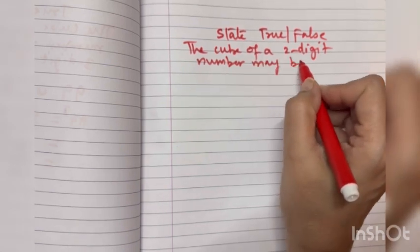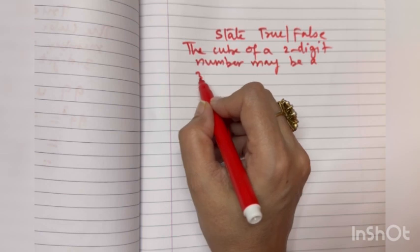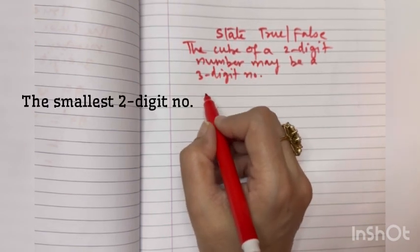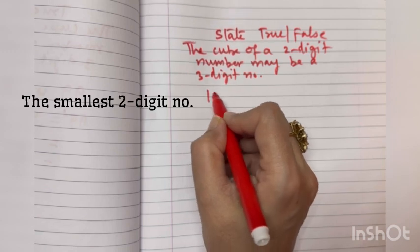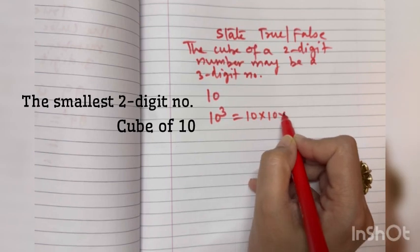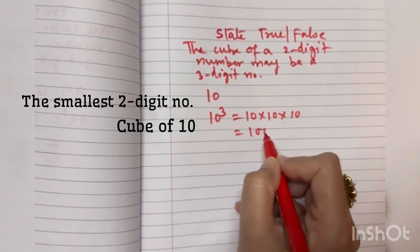Can you tell me the smallest two-digit number? Ten. So the smallest two-digit number is ten. What is ten cube? Thousand. Ten into ten into ten and the answer is thousand.